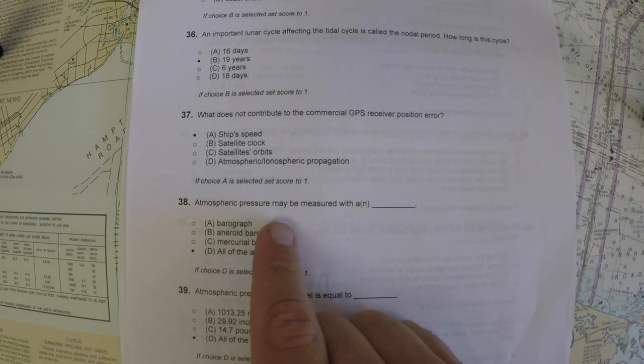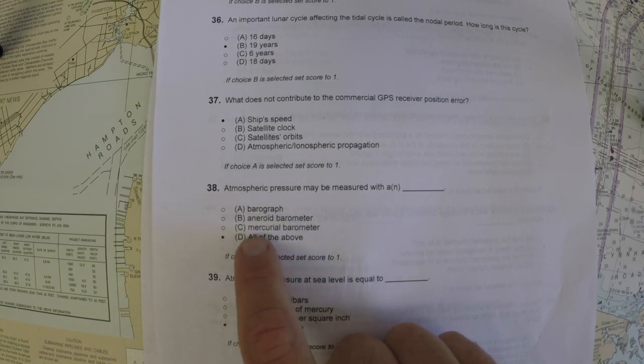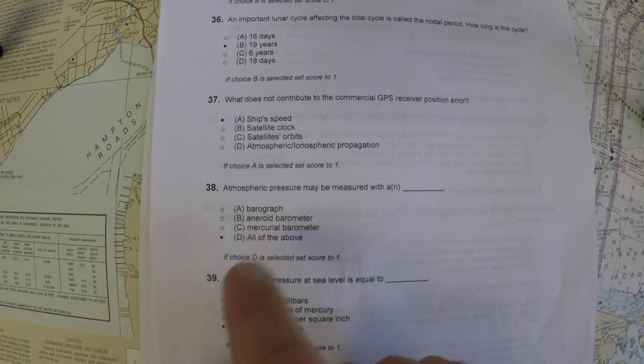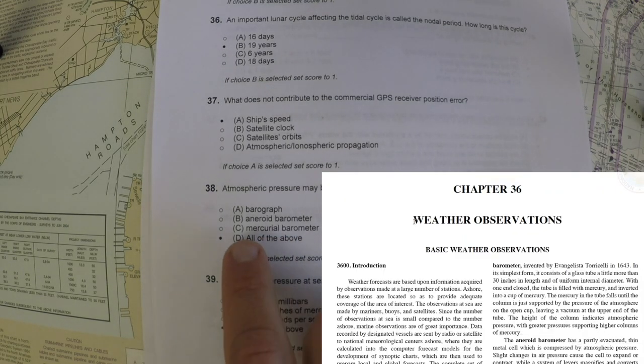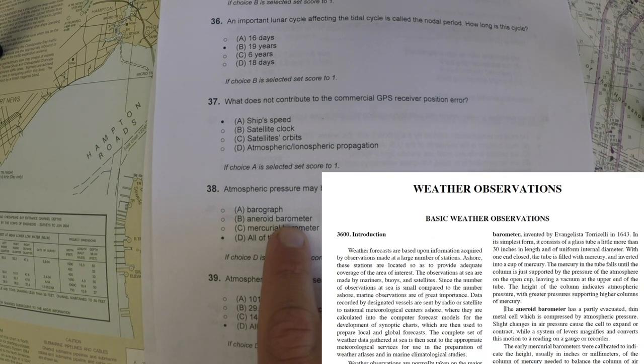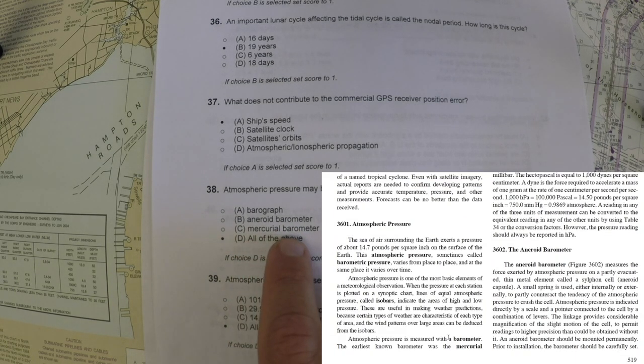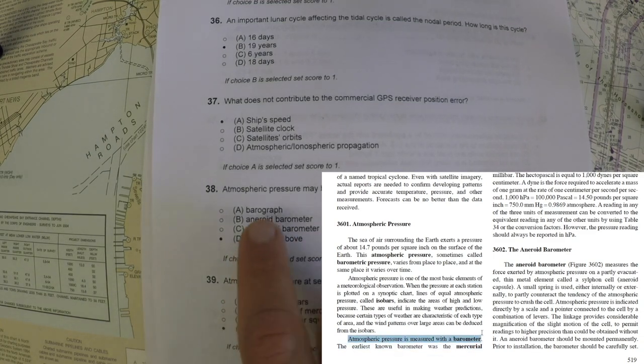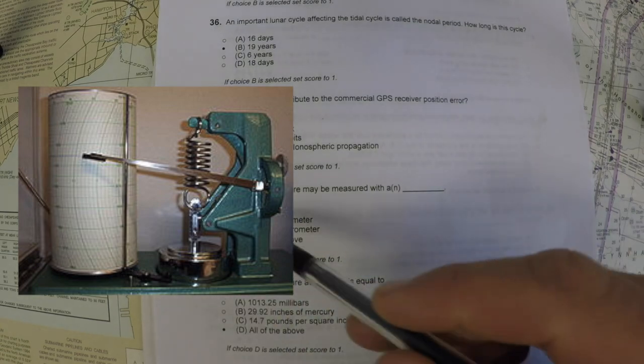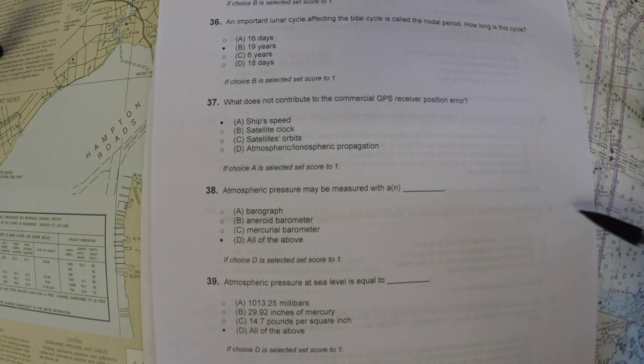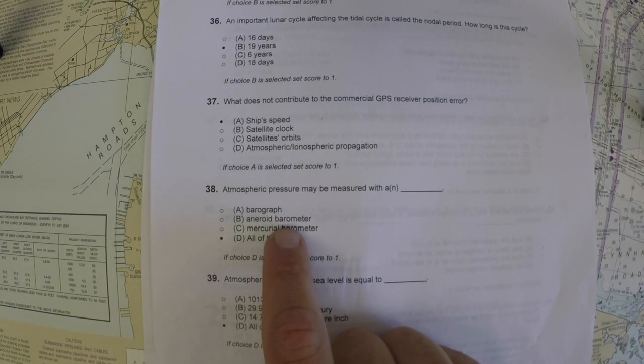Number 38: atmospheric pressure can be measured with what? If you look at all these answers—barograph, aneroid barometer, mercurial barometer—hopefully you've heard of barometers before. In Bowditch there's a description of them. An aneroid barometer works by metal heating at different rates. A mercurial barometer works by mercury experiencing atmospheric pressure. A barograph is just a barometer attached to a diagram so it can trace the barometric pressure over time. Therefore the correct answer would be all of the above. If you think of pressure, think of barometer.